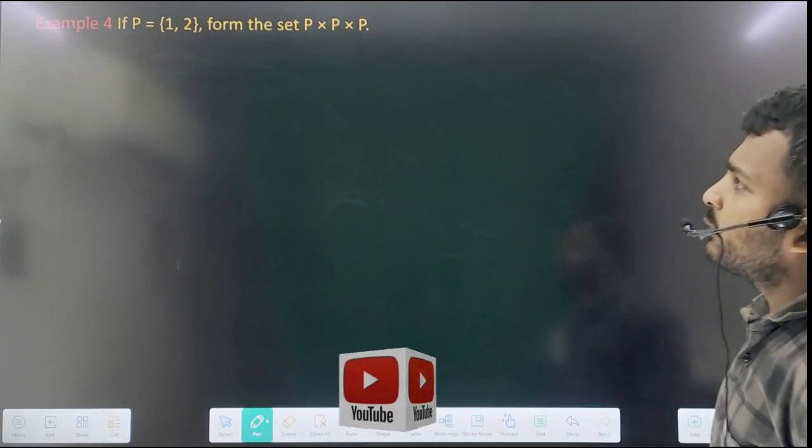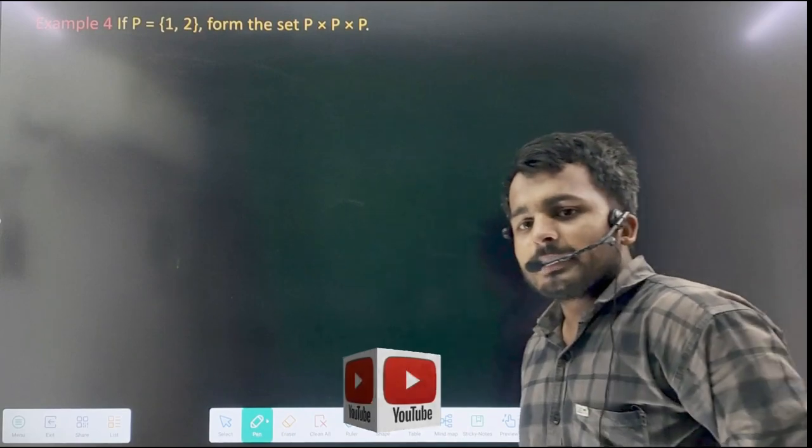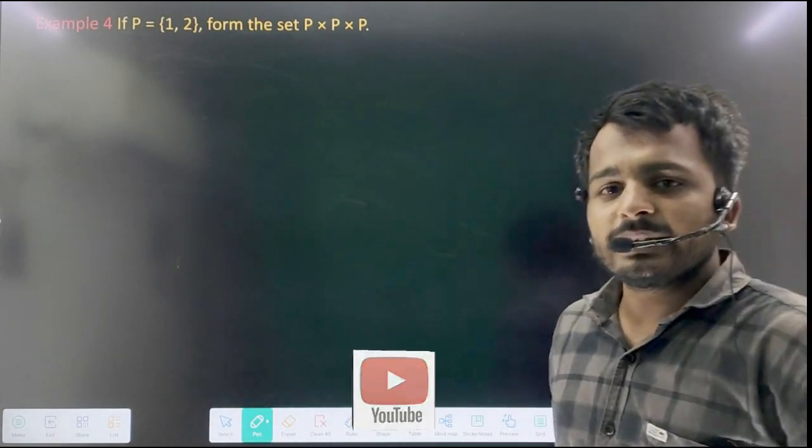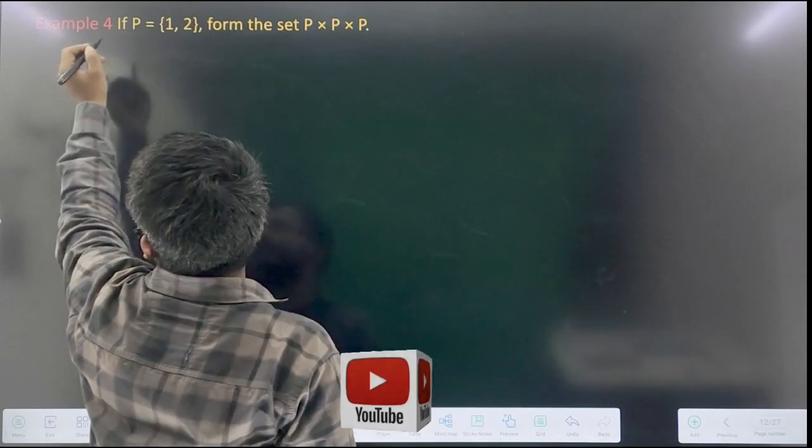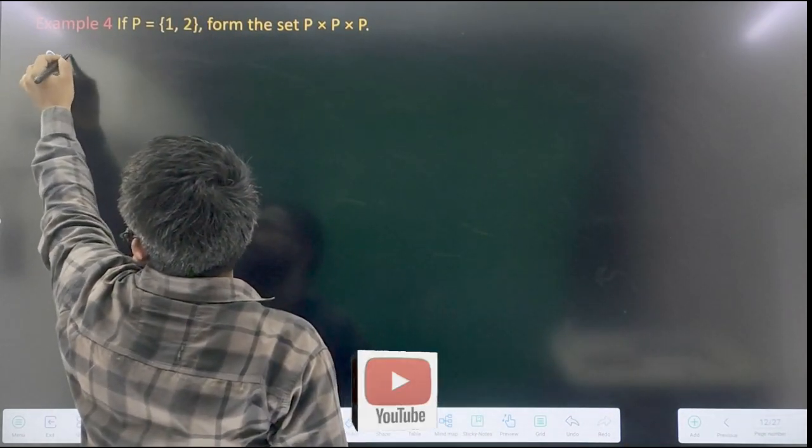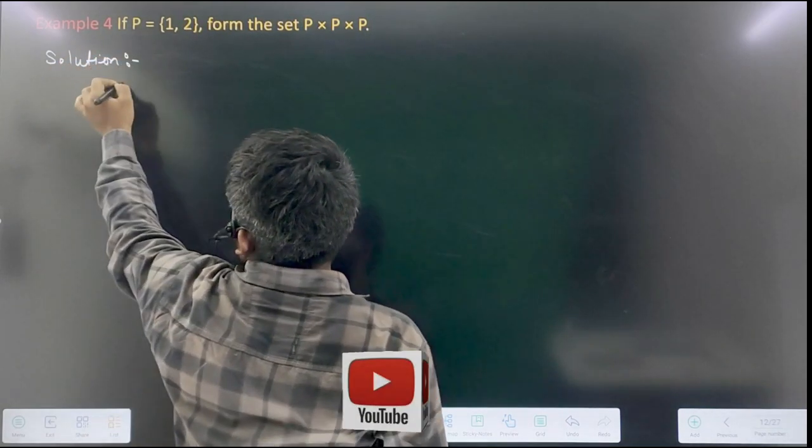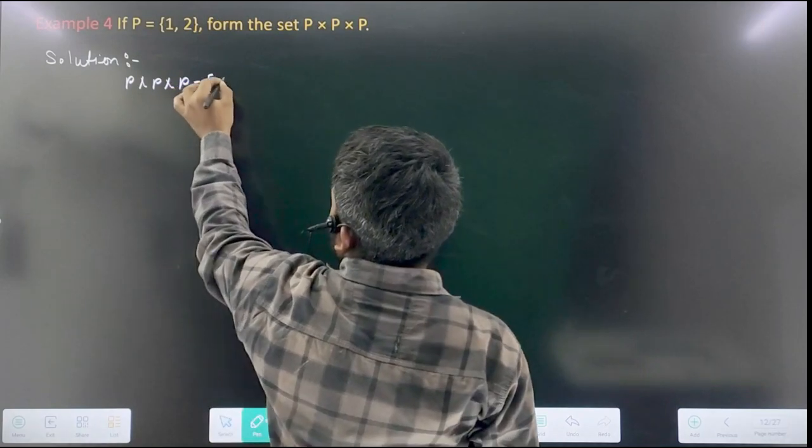See that P is equal to {1, 2}, so form the set of P × P × P. What about P × P × P? Triples are coming in it, okay?